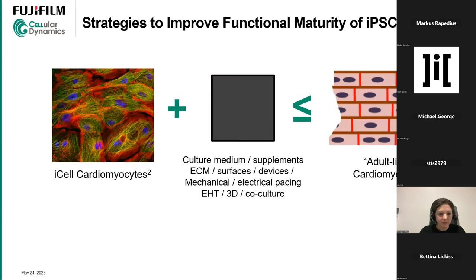There are also strategies to improve the functional maturity of iPSC-derived cardiomyocytes. Most people want to make cells look like adult cardiomyocytes, and approaches include different culture medium supplements, extracellular matrix surfaces, modified surfaces such as ECMs with patterning. There are also devices that can support these improvements. I'm going to mostly focus on the 3D and co-culture aspects.